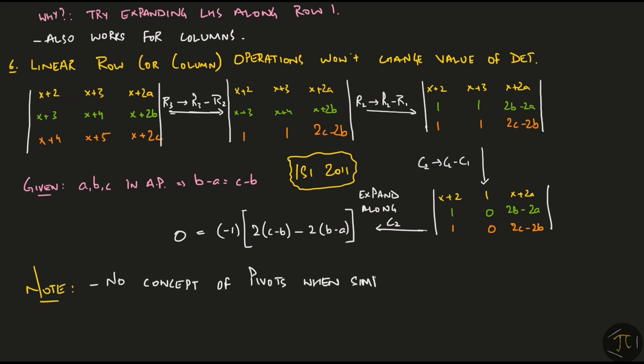A few things to note here. First, there is no concept of pivots when simplifying determinants. Our goal is to get a row or a column such that it has majority of zeros, so that expansion along it would be easy. Next, you can mix row and column operations with determinants, but remember that you should stick to only row operations with matrices.